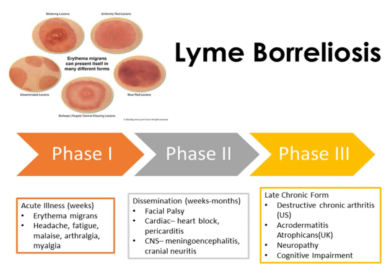Lyme Borreliosis typically occurs in three different phases. The first phase is the presentation of erythema migrans or bullseye rash, which can present in varied ways and is not always recognized, and some people may not develop it. Acute illness also includes nonspecific symptoms like headache, fatigue, malaise, arthralgia, and myalgia. In the second phase, post-dissemination, patients can exhibit facial palsy or Bell's palsy, cardiac manifestations such as heart block and pericarditis, and central nervous system manifestations, most commonly meningoencephalitis and cranial neuritis. In the late chronic form, about 10 to 15% of U.S. patients develop chronic arthritis, and in Europe patients can develop acrodermatitis atrophicans.